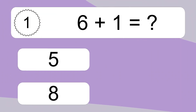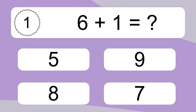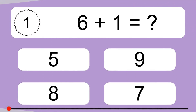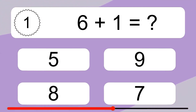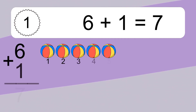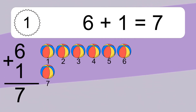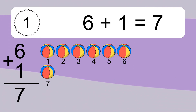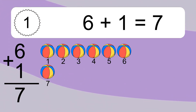6 plus 1 equals what? 6 plus 1 equals 7. Let's count it. 1, 2, 3, 4, 5, 6, 7.